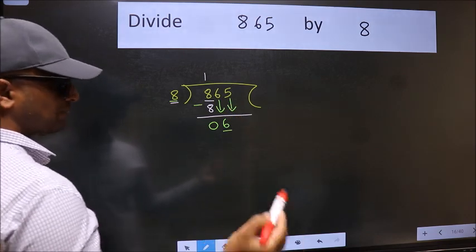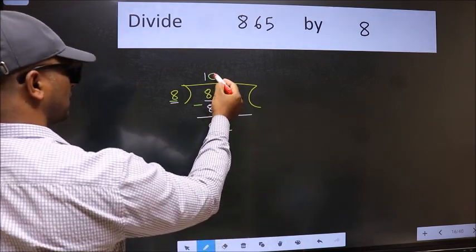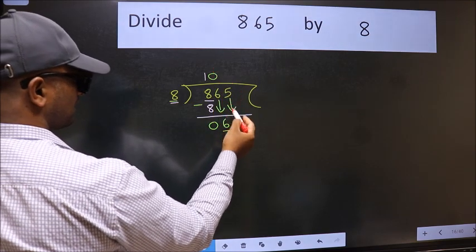The rule to bring down the second number is we should put 0 here. Then only we can bring this number down.